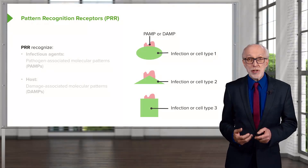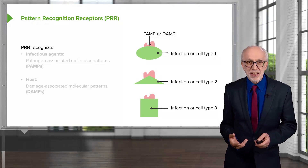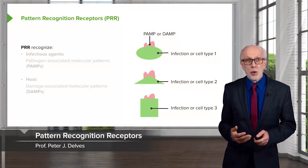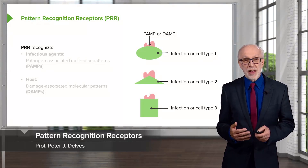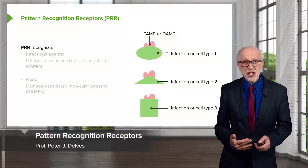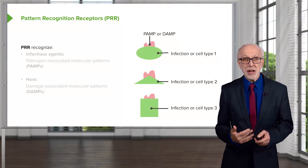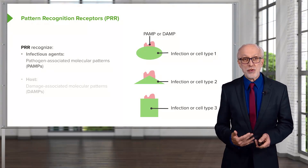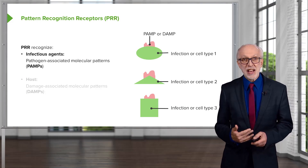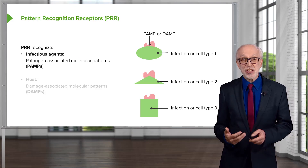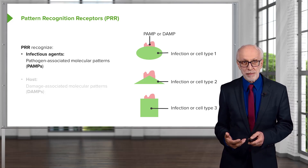So how is a threat detected? There are these pattern recognition receptors, PRRs, that can recognize infectious agents.